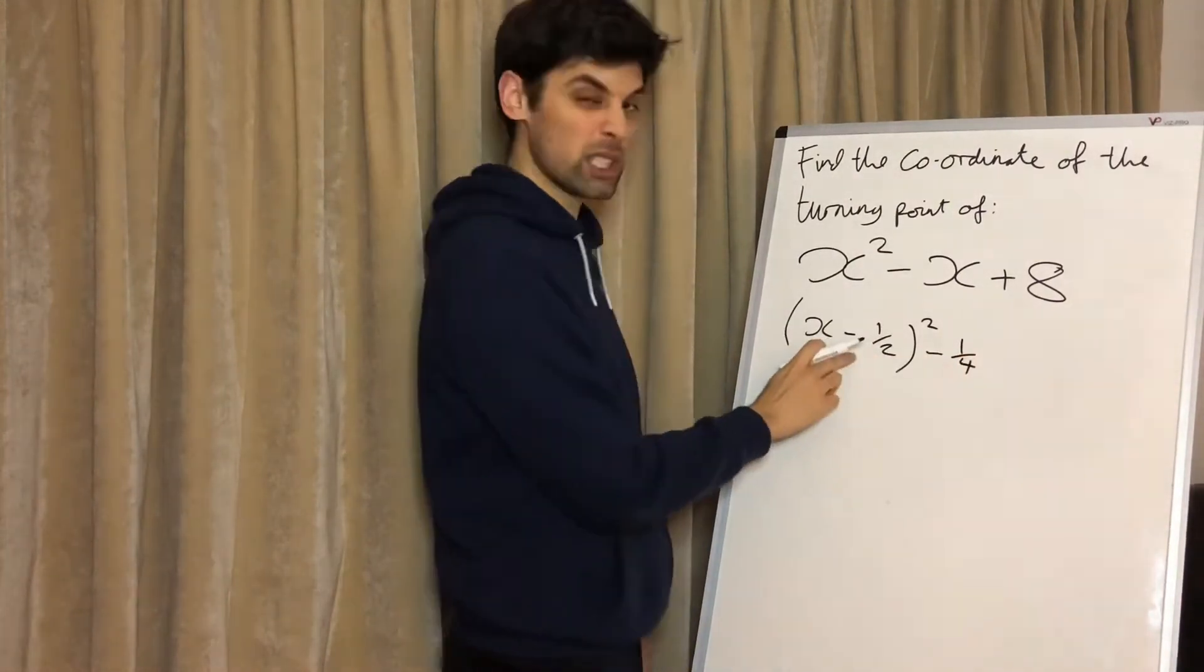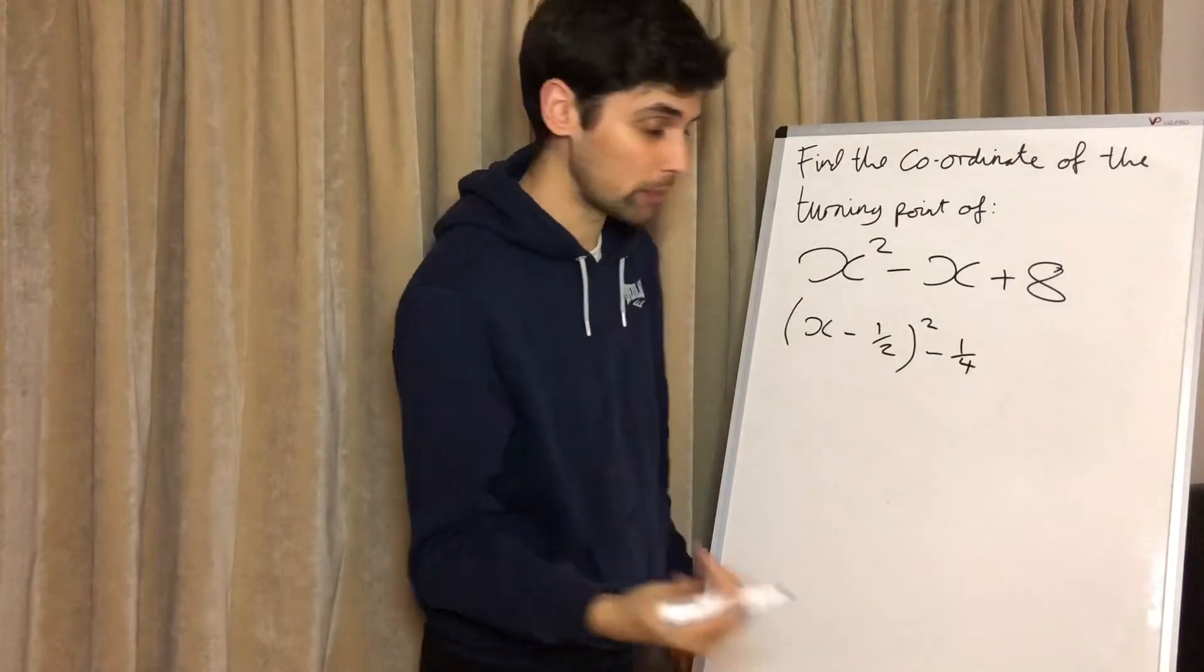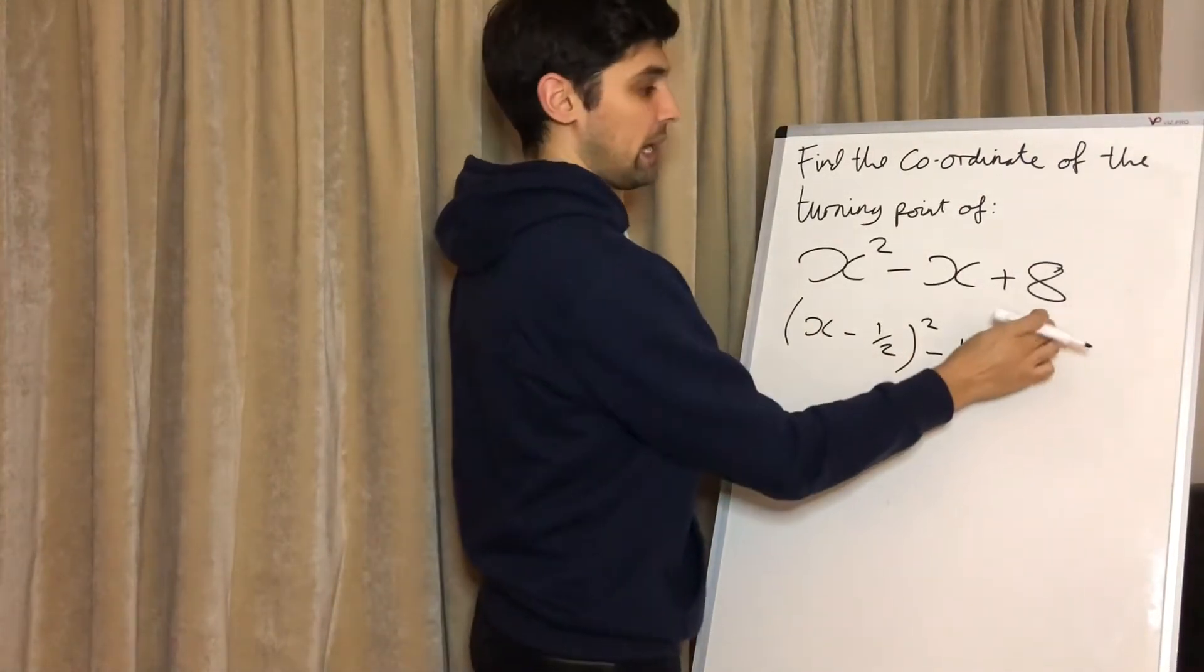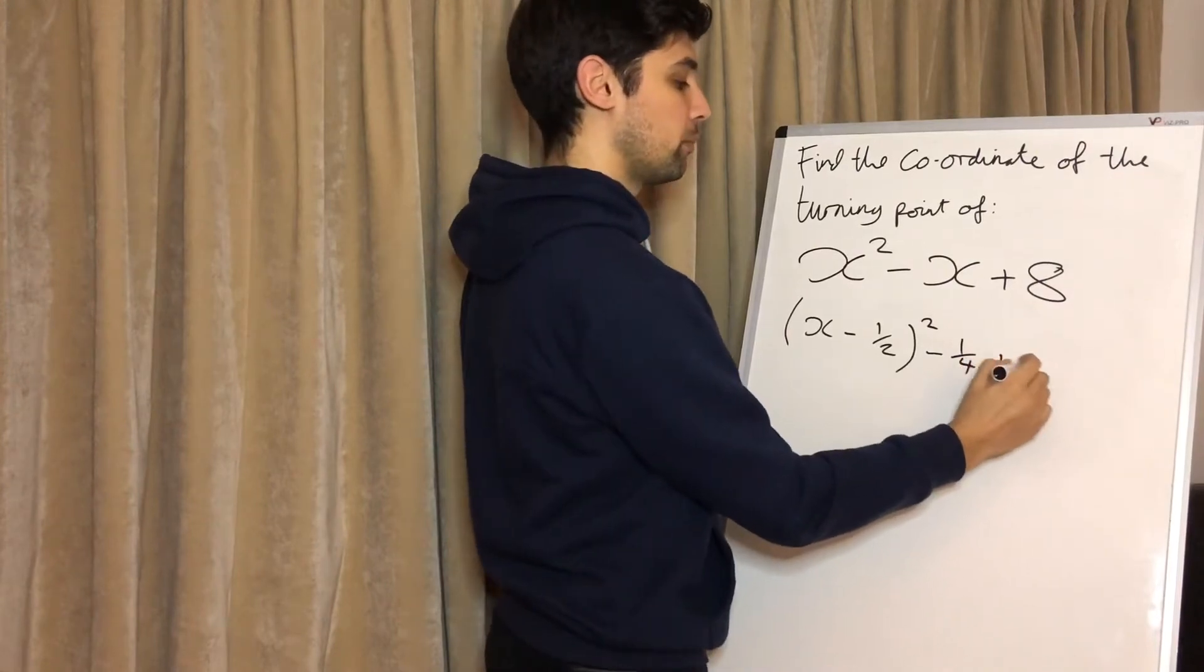It doesn't matter if that's positive or negative because minus half times minus half is also a quarter. So we minus a quarter and then we bring this number down, plus eight.